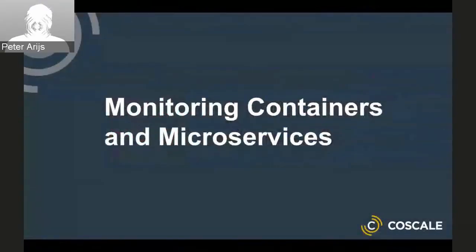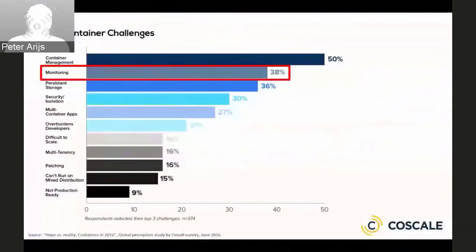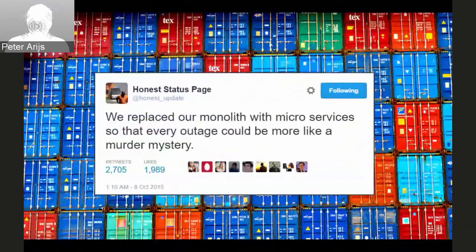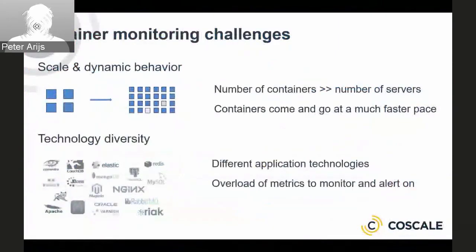Monitoring is an important part of running an application in production, yet many people are still struggling with this for containerized applications. This is data from a recent survey by Cloud Foundry on the top challenges when running containers and microservices in production — monitoring is pretty high up, just after container management. The first obvious observation is that the number of containers is much higher than the number of servers, so the number of instances to monitor increases by an order of magnitude. Customers typically use up to 10 or 20 containers per host, with some cases reaching up to 100 containers.